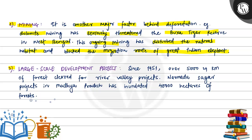The third point is large-scale development projects. Since 1951, over 5,000 square kilometers of forest have been cleared for river valley projects. The Narmada Sagar project in Madhya Pradesh alone has cleared 40,000 hectares of forest.